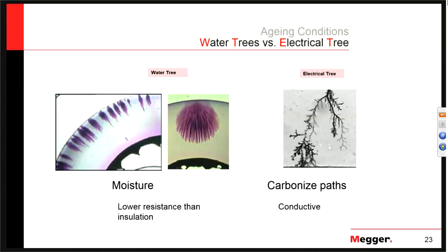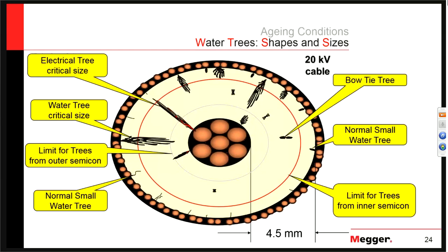The conductivity of electrical trees comes from carbon on the outer edges of the channel. Once the electrical tree bridges enough of the insulation, the cable faults and we have to go repair it. Water trees take a very long time to grow — 5, 10, 20 years. But electrical trees, once they form, will fail a cable in a number of hours. When a water tree grows to a critical size, it's in danger of growing an electrical tree at any moment, causing failure.